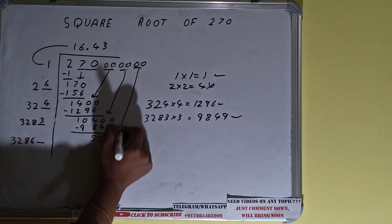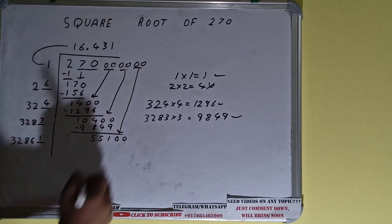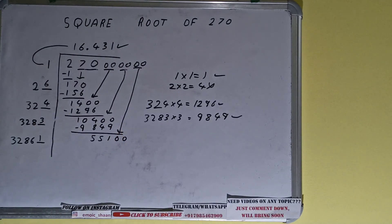Over here bring one more pair of zeros down and the number will become as 55,100. Clearly one time will work. So one here and one here, but we don't need to calculate because we already got the answer correct up to three decimal places.